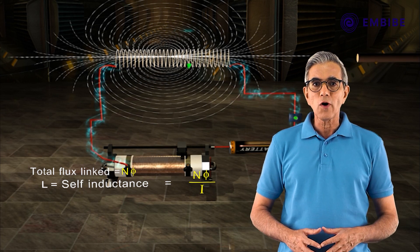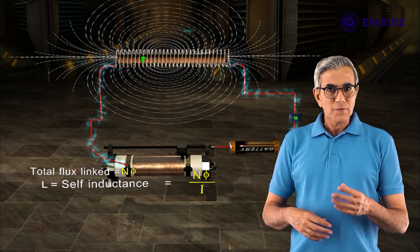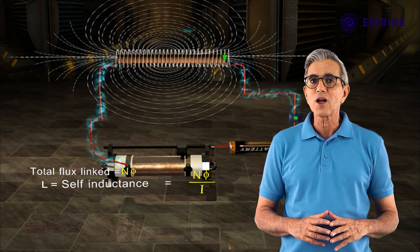For example, if the coil is wound around a soft iron core, after ensuring proper insulation, L attains a very large value.